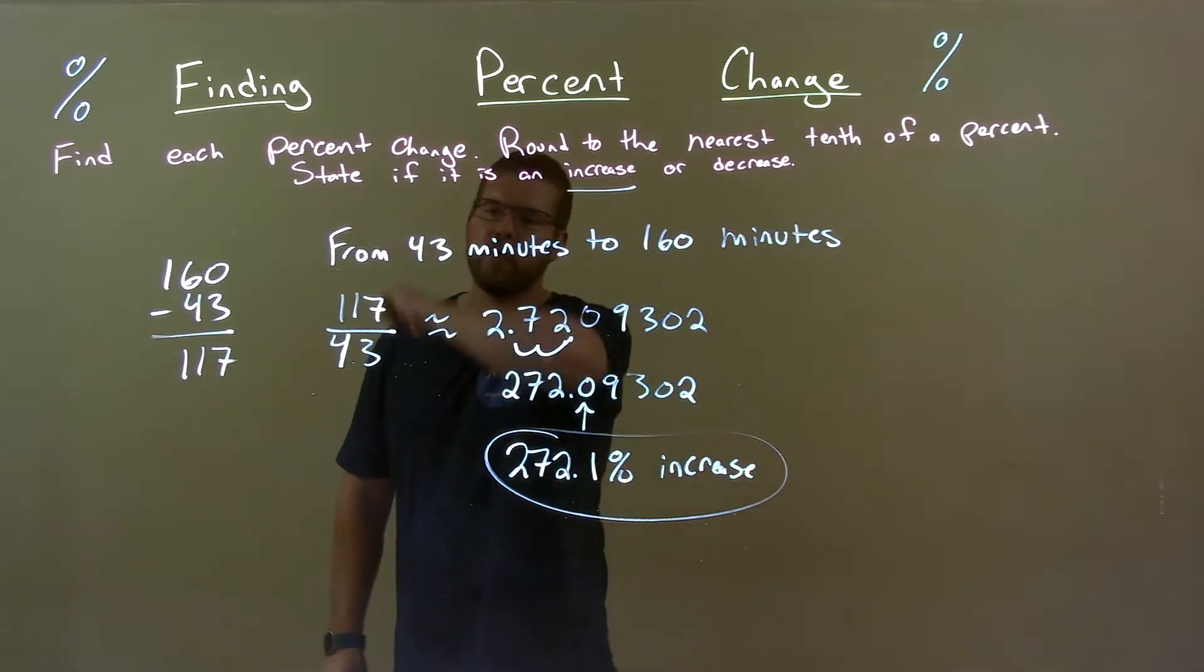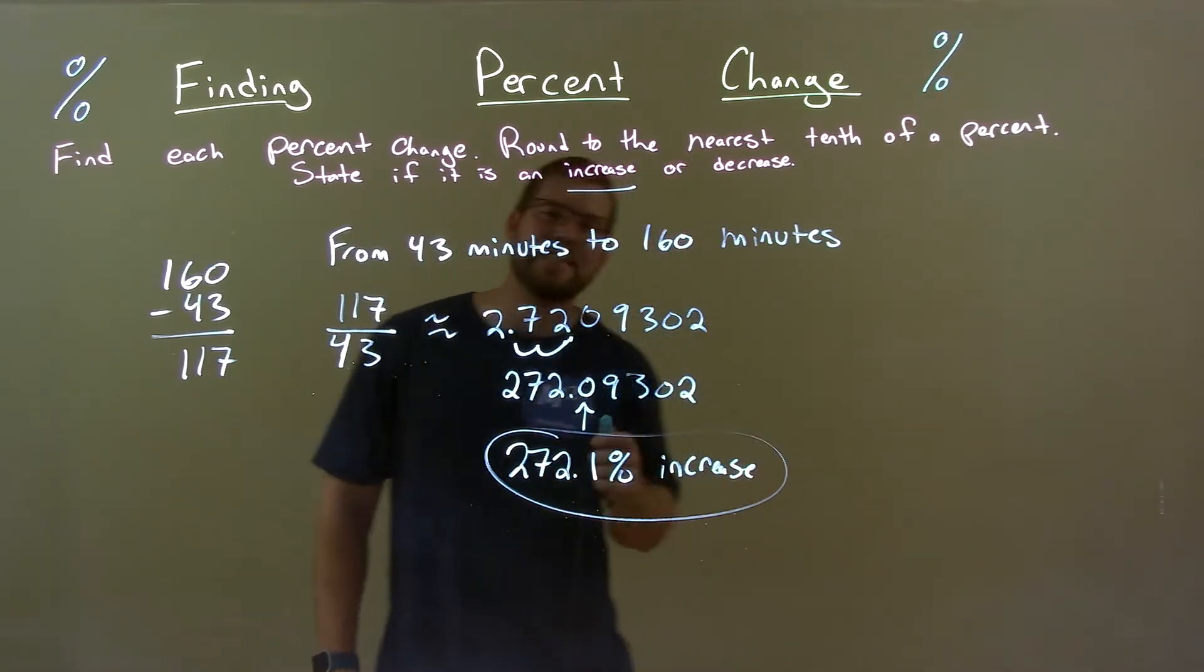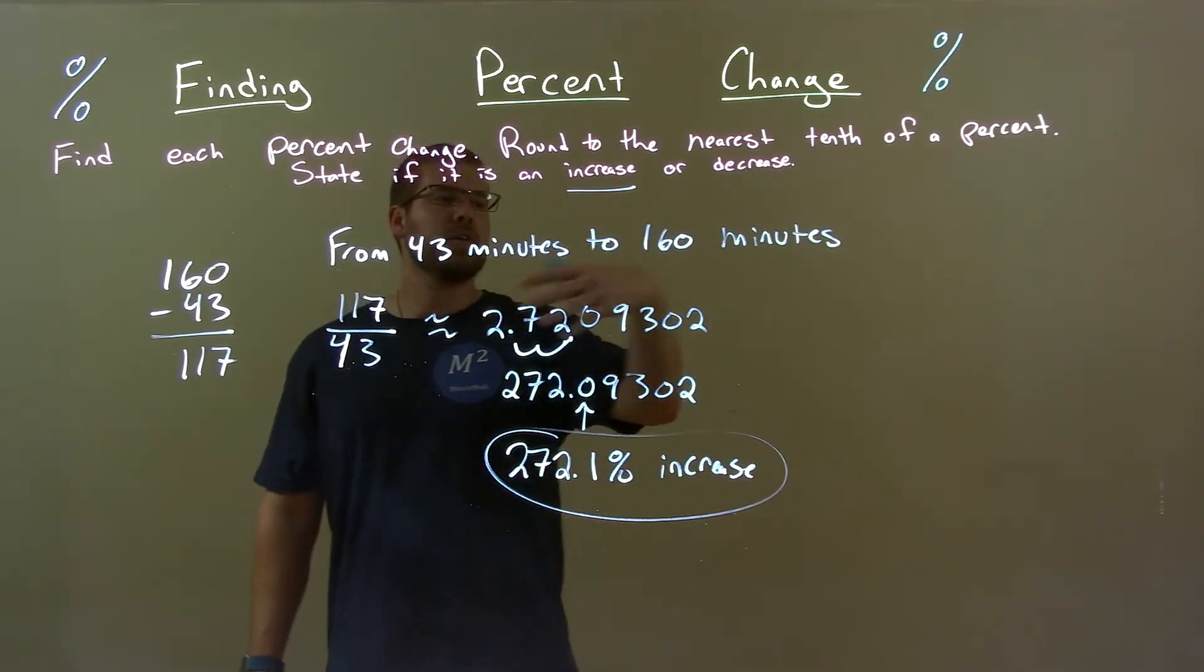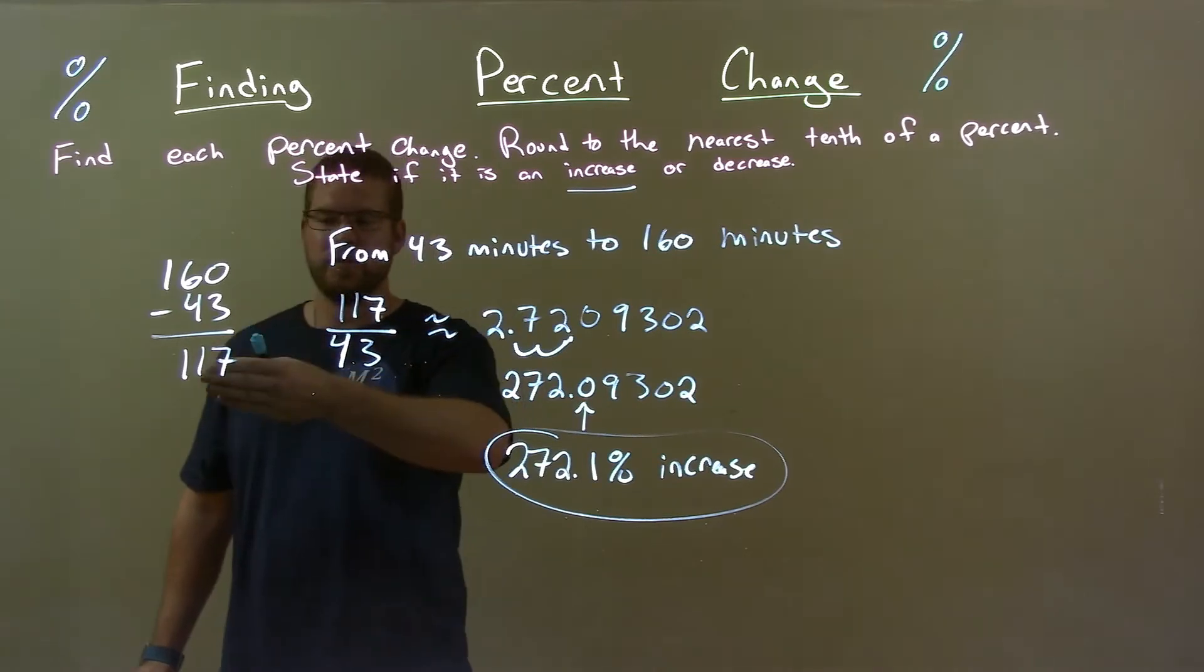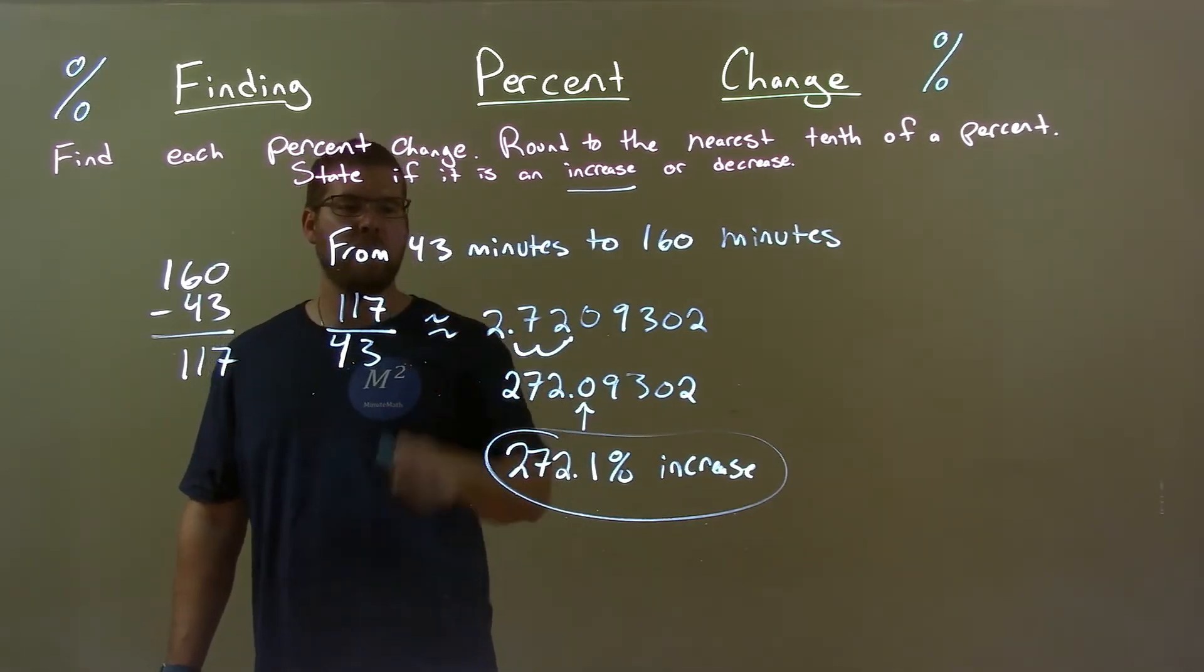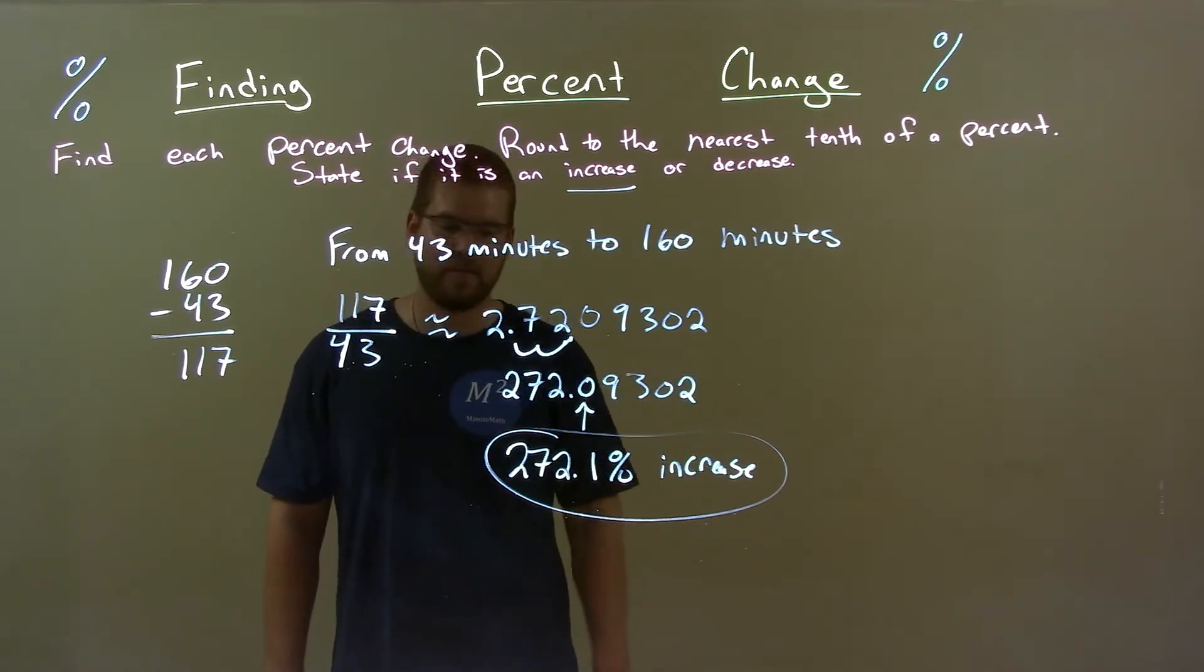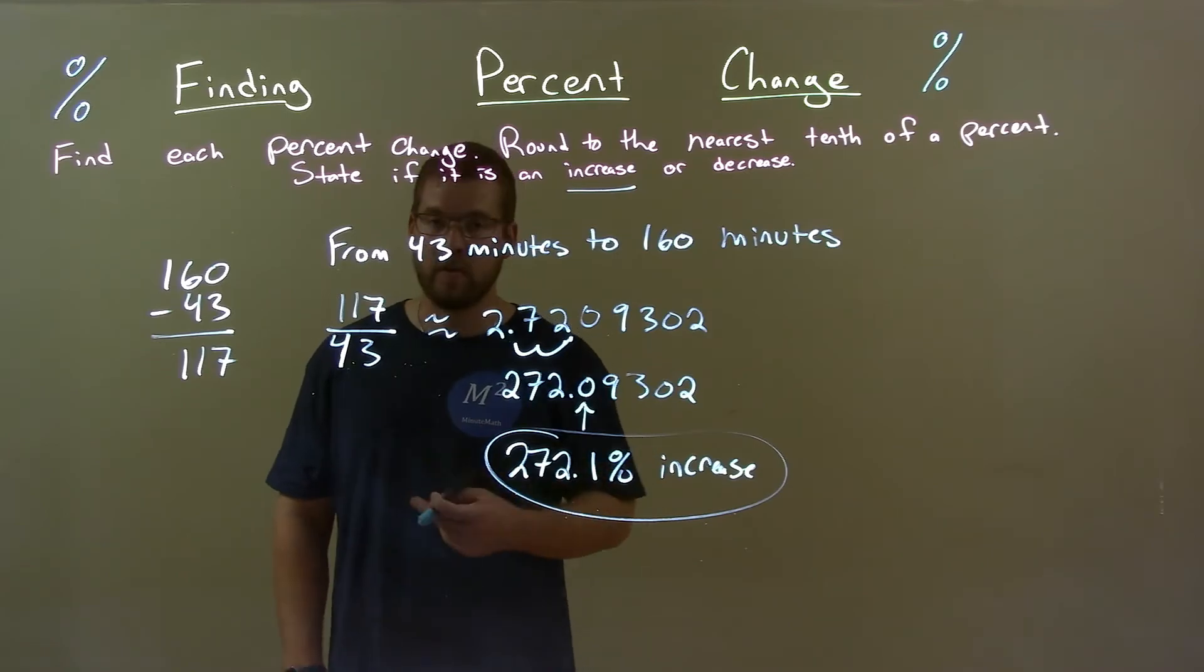Quick recap. We're given from 43 minutes to 160 minutes, and we have to find the percent change. Clearly an increase there. We found the difference between the two, divided that by the first number, took that decimal, wrote it as a percent, rounded that percent, and got our answer: 272.1% increase.